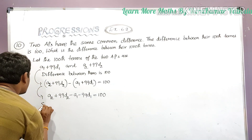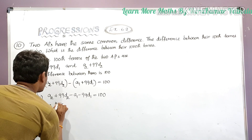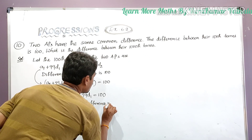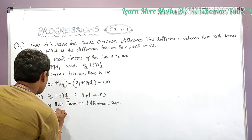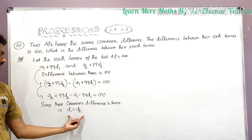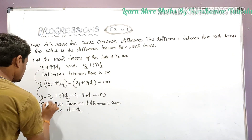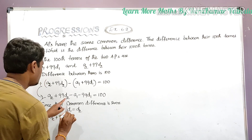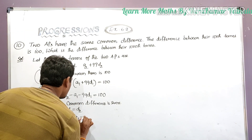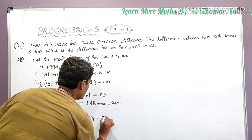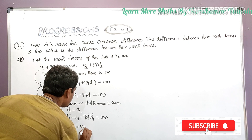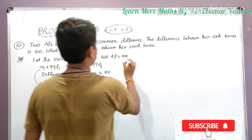Since the two APs have the same common difference, d1 equals d2. So we replace d2 with d1: a2 plus 99d1 minus a1 minus 99d1 equals 100. The 99d1 terms cancel out, giving us a2 minus a1 equals 100. Let this be equation number 1.